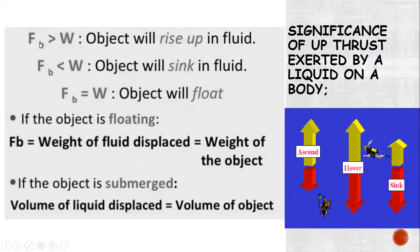Now the significance of upthrust exerted by a liquid on a body. There are three situations when comparing the buoyant force and the weight of the object. First, if the buoyant force is greater than the weight of the object, the object will rise up in the fluid. You can see the red arrow representing the weight and the buoyant force arrow — if the buoyant force is more, meaning the object displaces more fluid weight than the object's own weight, the object will rise up and float on the surface.